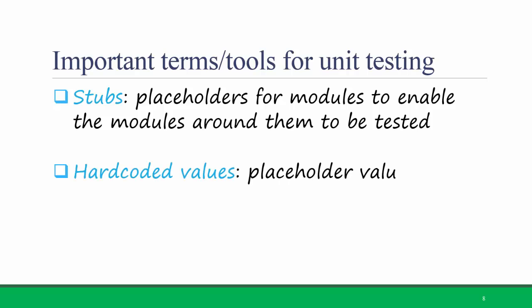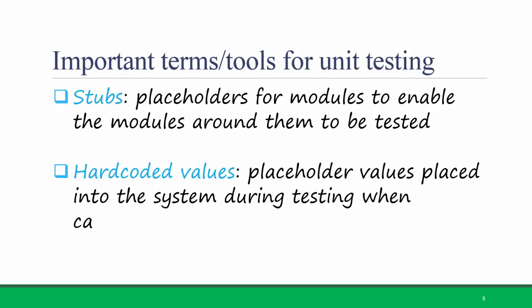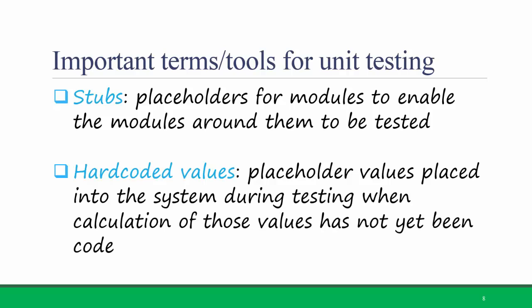Hard-coded values are placeholder values placed into the system during testing when calculation of those values has not yet been coded. For example, if we were creating the grading module in Titanium but we hadn't yet coded how the final grades would be calculated, we might hard-code a value of a letter grade A to display after we've input several grades. Stubs and hard-coded values allow you to test smaller parts and modules of your system before other modules are completed.